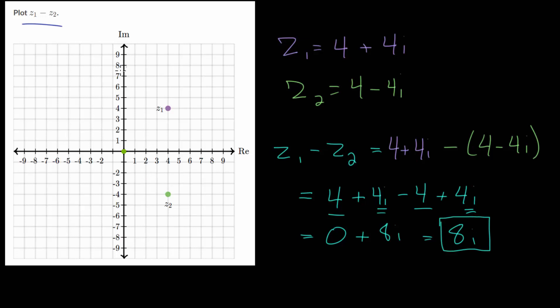If we wanted to graph that, it would be right up here. But we can also approach this using vectors to check our work. The vector to Z1 will look like that, and you can draw the arrow in if you want. The vector to Z2 looks like this.